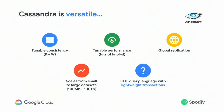Cassandra is versatile — it can do many things quite well. It has tunable consistency and tunable performance, with a lot of knobs you can tune to almost optimize at the use-case level. It has global replication. It scales pretty well from very small, like megabytes, to terabytes in terms of dataset size. And it comes with a handy query language similar to SQL, and lightweight transactions — so you can express things like insert-if-not-exist, which is a pretty powerful feature.